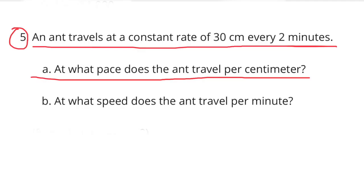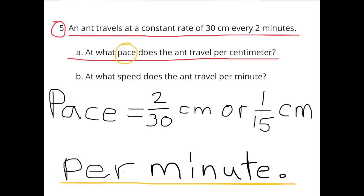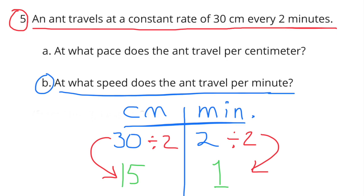Number 5: An ant travels at a constant rate of 30 centimeters every 2 minutes. At what pace does the ant travel per centimeter? The pace is 2 minutes over 30 centimeters, or 1/15th. At what speed does the ant travel per minute? I made a table with centimeters on the left and minutes on the right. 2 minutes divided by 2 equals 1 minute; 30 centimeters divided by 2 equals 15 centimeters. So the speed of the ant is 15 centimeters per minute.